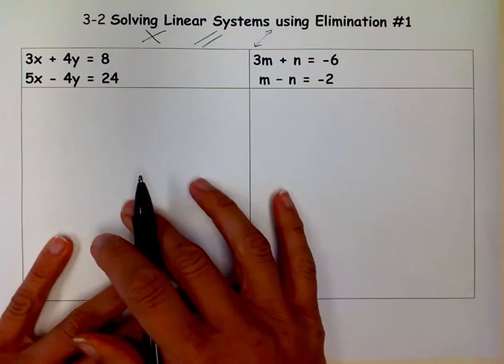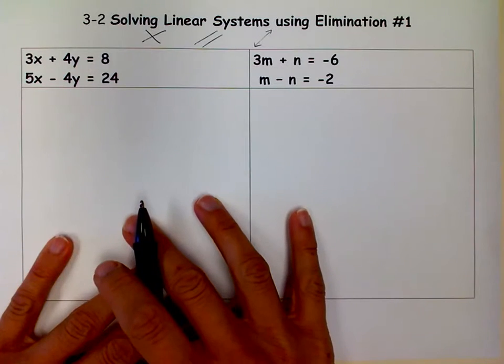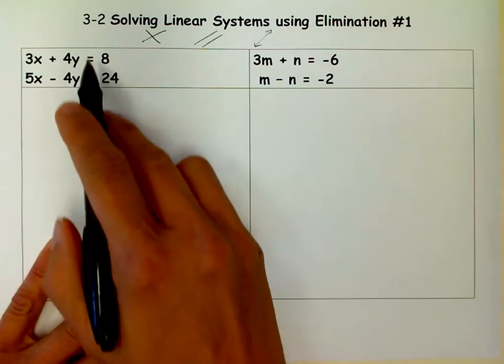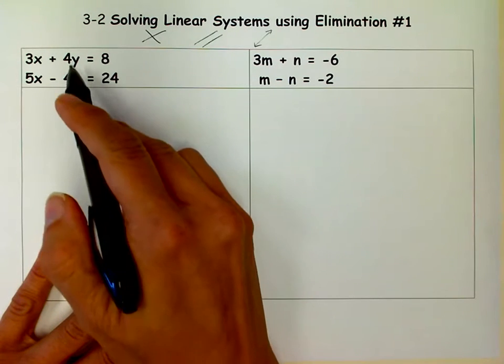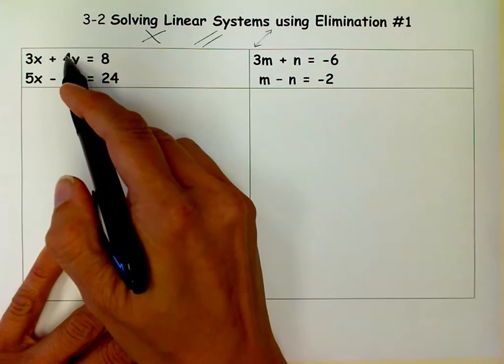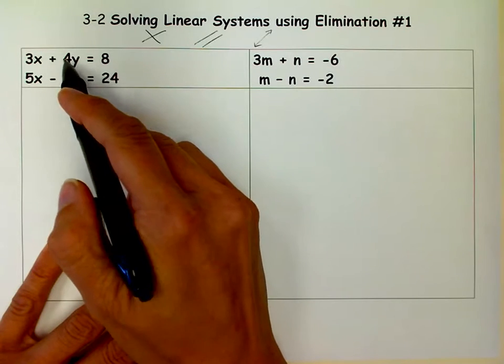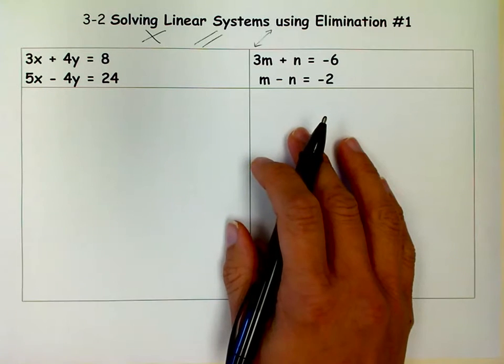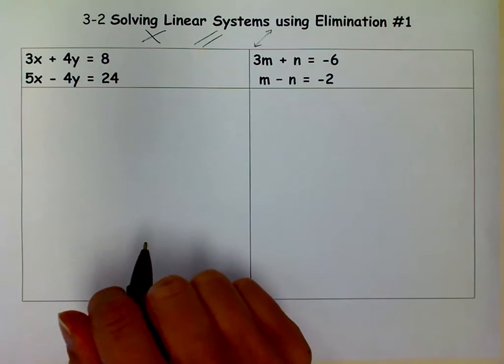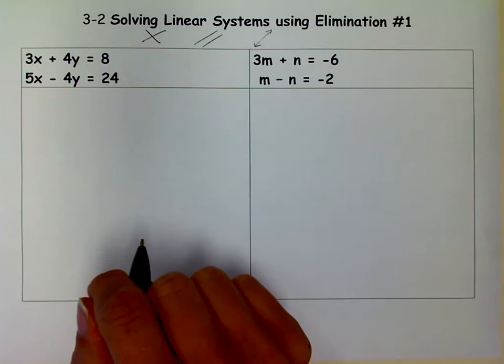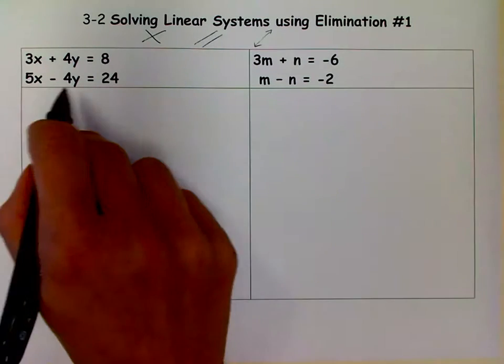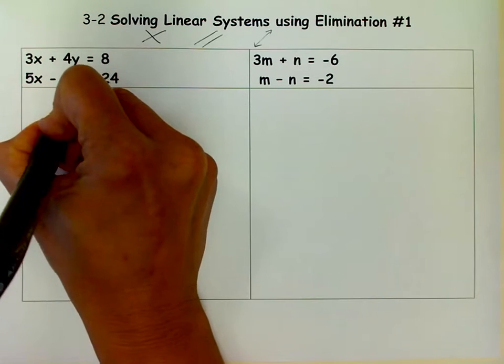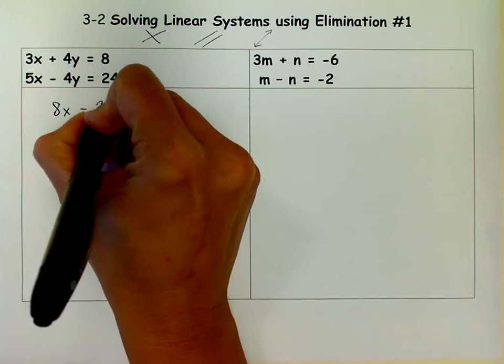The first two steps are kind of simple because they're done for us. The first step is to make sure everything is lined up: the x's, the y's, the equal signs, the numbers. The second step is to pick one of the variables and find coefficients that are opposites. So once those two steps are done, we just simply add the equations. And when we add the equations, we eliminate one of the variables. That's why we call it elimination.